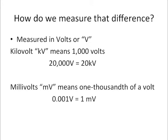So, how do we measure the difference? We measure it in volts and we use kilovolts to mean a thousand volts or some kind of very large number of volts like 20,000 volts or 30,000 volts. We also use millivolts to mean one thousandth of a volt. So, if we're measuring a really small voltage, then we're going to measure that in millivolts. One kilovolt equals a thousand volts and one millivolt equals one thousandth of a volt.